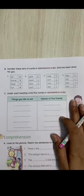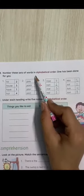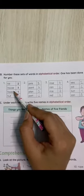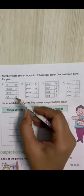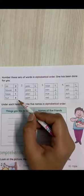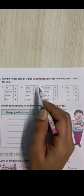Again we have one more exercise. Number these sets of words in alphabetical order. In these spellings, the first letters are the same, so we will check the second letters of these spellings.